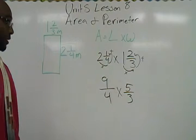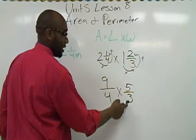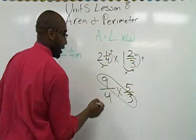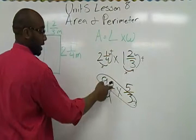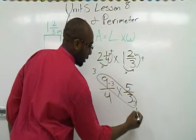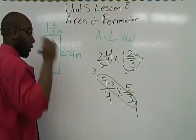After we do that, we are going to look for cross-division. Can anything go into nine and three divisible? Yes. Three can divide nine. Three can also divide three. So nine divided by three is three. Three divided by three is one. This is a way to simplify before we get to the end of our problem.